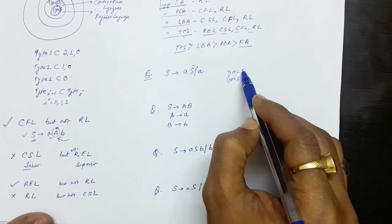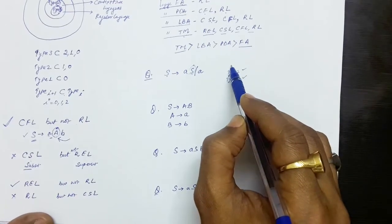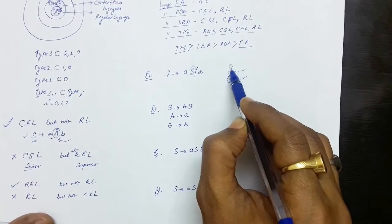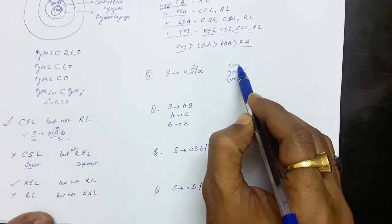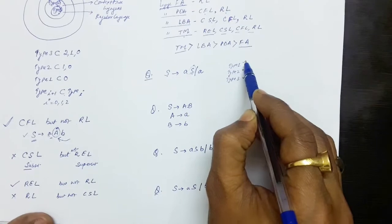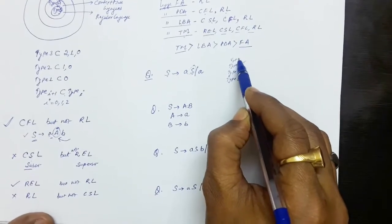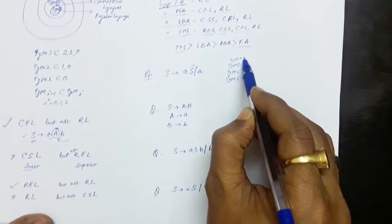If it is Type 3, obviously it is Type 2. If it is Type 2, obviously it is Type 1. And if it is Type 1, obviously it is Type 0 as well.